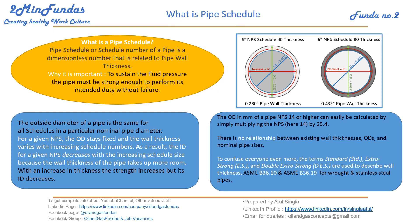The outside diameter of a pipe is the same for all schedules. For example, the outside diameter for a six-inch pipe will remain the same, but with increasing schedule number from 40 to 80, the ID will keep on decreasing. For a given NPS, the OD remains fixed while the wall thickness varies with increasing schedule number.